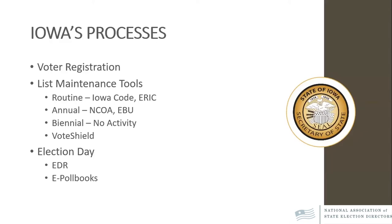Annually, we issue a no-activity mailing each spring after the general election. That mailing goes to people who did not participate in the most recent general election and have had no other activity on their voter registration profile. Those persons are then marked inactive, but the mailing provides all the information they need — if they did participate or have had some activity, they can immediately contact their county auditor by returning the prepaid postcard. If they have moved or made a change, they get information on how to update their voter registration profile. If someone receives the card in error, they're immediately reactivated once the county auditor receives that information.